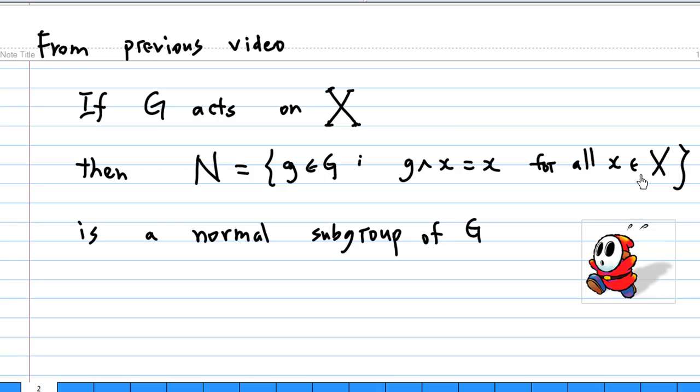Recall from the previous video, that is group action on a set part 3, if G acts on X, then the subgroup N consists of all the elements in G such that g^x equals x for all element x of X here. This subgroup N is a normal subgroup of G.